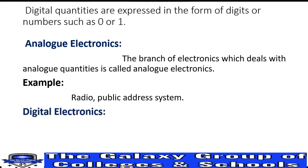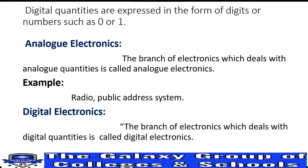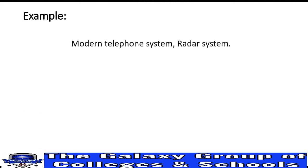Next is digital electronics. In digital electronics, the branch of electronics deals with digital quantities. The electronics branch in which we deal with digital quantities is called digital electronics, while the branch dealing with analog quantities is called analog electronics. Examples of digital electronics include the modern telephone system and radar system.